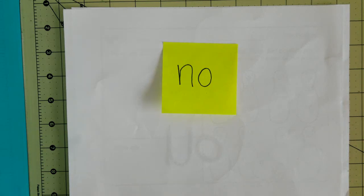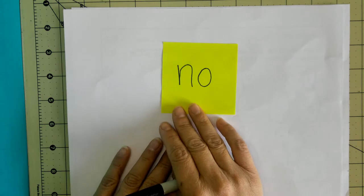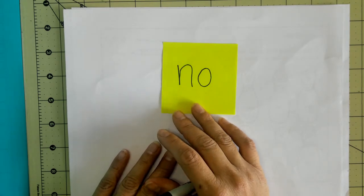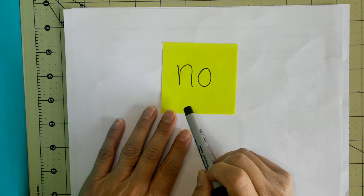Okay, boys and girls, today's sight word of the day is the word no. We're going to spell it and read it together, and then I'm going to show you what you're going to do after that. So let's spell it together. Ready?